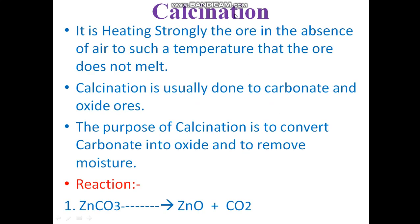What is calcination? Calcination is heating the ore strongly in the absence of air to such a temperature that the ore does not melt. Calcination is done only to carbonate and oxide ores. The purpose of calcination is to convert carbonate into oxide and to remove the moisture.